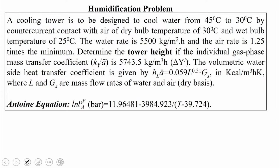The volumetric water side heat transfer coefficient is given by: HLA' = 0.059 × L^0.51 × GS, in kcal per meter cube hour Kelvin, where L and GS are mass transfer rates of water and air on a dry basis. The Antoine equation is ln(PVA) = 11.96481 − 3984.923 / (T − 39.724), where temperature is in Kelvin and pressure is in bar.